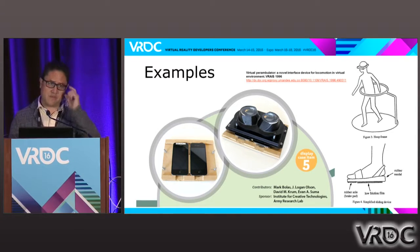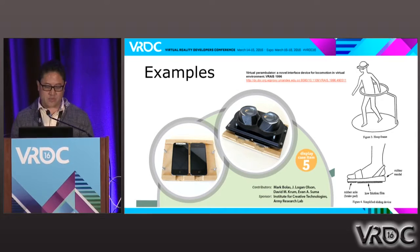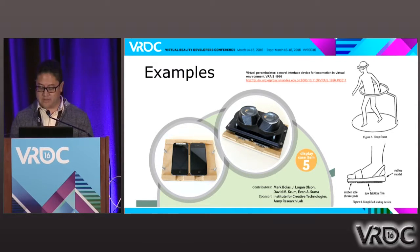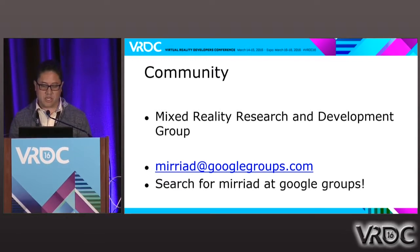Some examples of things that we have done in the past that maybe resemble things you may know now: there is this nice but really weird word 'perambulator' from 1996 that may resemble something you know now. And there is a really nice project that Evan and others at ICT did in 2011 that also relates to products you can find now in the industry. We call our new group the Myriad for Mixed Reality Research and Development Group.